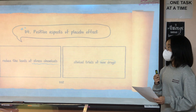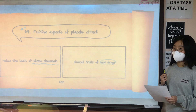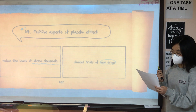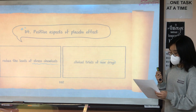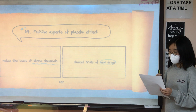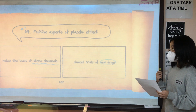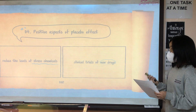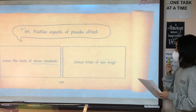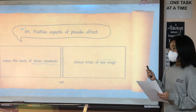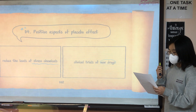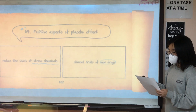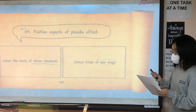The fourth topic is the positive aspects of the placebo effect. The first positive aspect is reducing the levels of stress chemicals. Taking a placebo and expecting to feel better may be soothing and reduce the levels of stress chemicals such as adrenaline, which the body produces. The second positive aspect is clinical trials of new drugs, which have been used for a long time and are an essential part of researching new treatments and their possible effects.